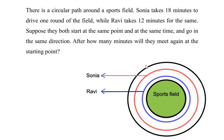And Ravi takes 12 minutes, which is less than Sonia, so Ravi is given by the blue circle which is smaller than the red circle. Now suppose they both start at the same point and at the same time.